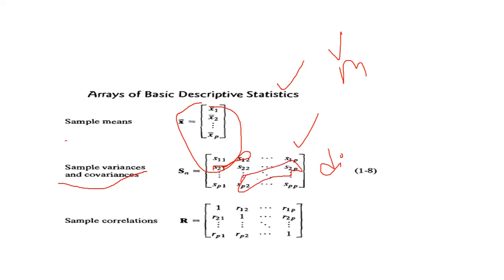This is the sample correlation matrix. Here you got one because diagonal elements are one in correlation matrix. Because what is the formula for correlation means covariance of x divided by standard deviation of x into standard deviation of y.